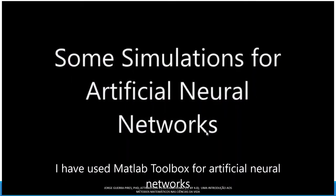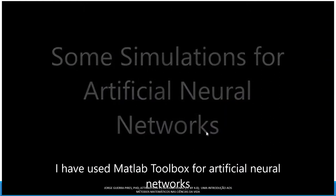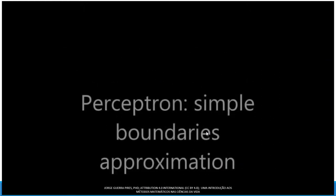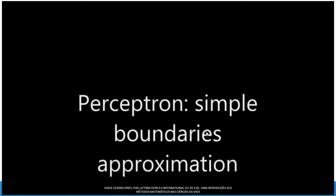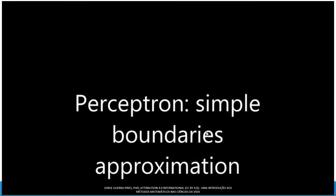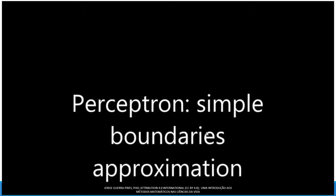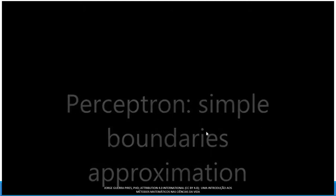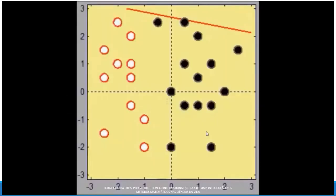Some simple examples of artificial learning at work — very simple examples. The first one is a perceptron, which finds a linear boundary. It's a very classic and simple example.